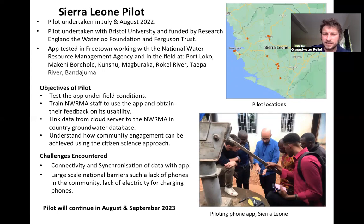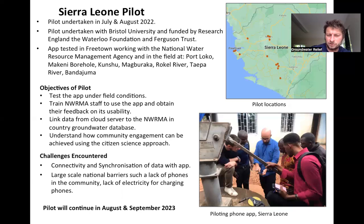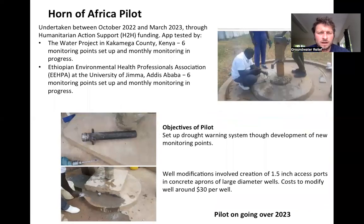What we found during the pilot were some significant problems with connectivity and data synchronization, which we've been addressing since the pilot finished. There were also large-scale national barriers, such as a lack of phones in communities and a lack of electricity, making community engagement more difficult initially.